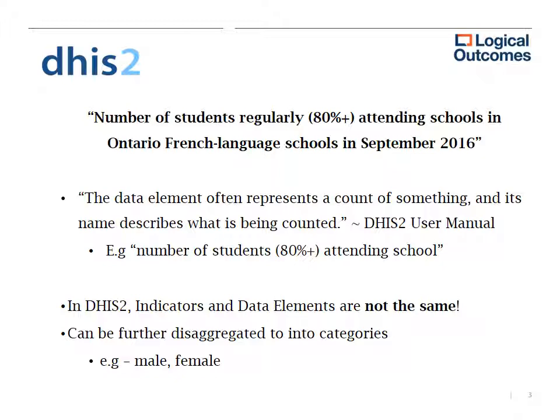Data elements can also be further disaggregated into categories. We can break it up into gender — male, female, other — or by age range, such as below or above 18 years old, and so on. The possibilities are limitless.